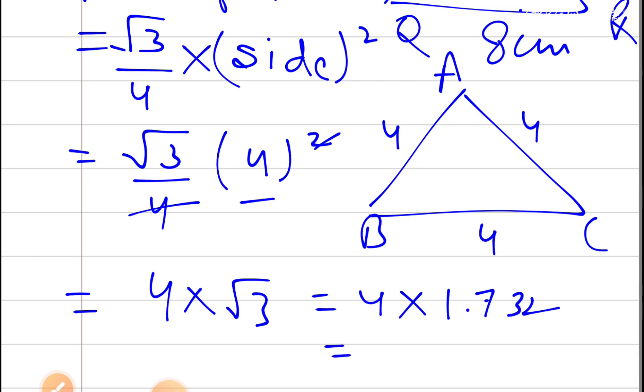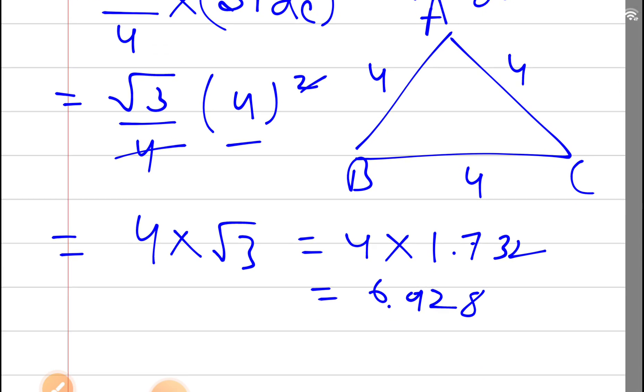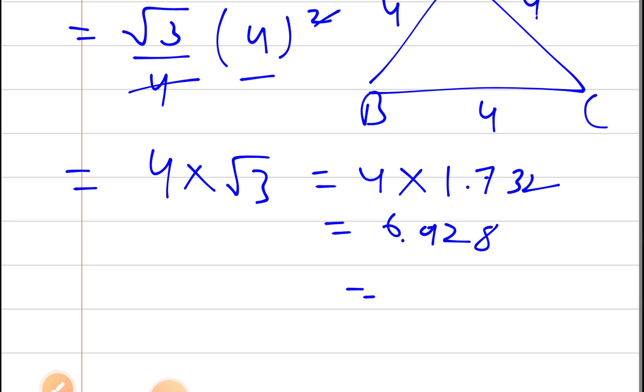So we will get 4, and multiplying this gives us approximately 6.9. So we can write it as 6.9 cm square.